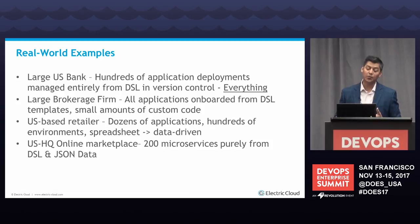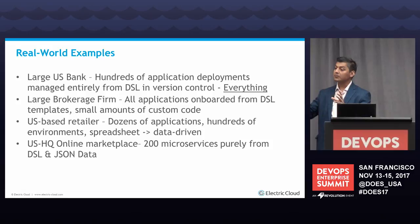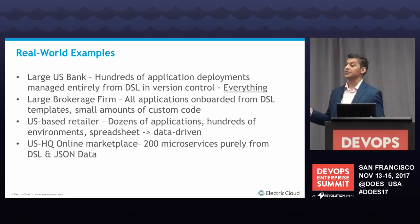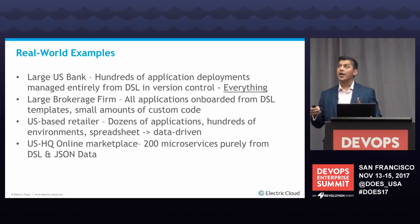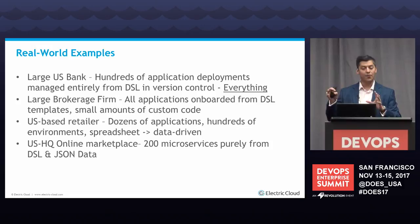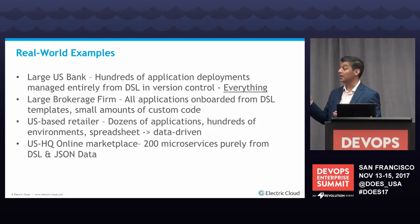Some real-world examples — no names given. One large US bank had several hundred application deployments. My team helped them model their system, and everything was done in a domain-specific language. It was all process as code — there wasn't any UX, it was just auto-generated. That's really big for teams that want to achieve that kind of scale. There's also a large brokerage firm who wanted a template-based design — not a hundred different snowflakes, but one general template. That was a problem solved with process as code using a lot of looping and scripting, and it worked really well for onboarding however many they needed very quickly.